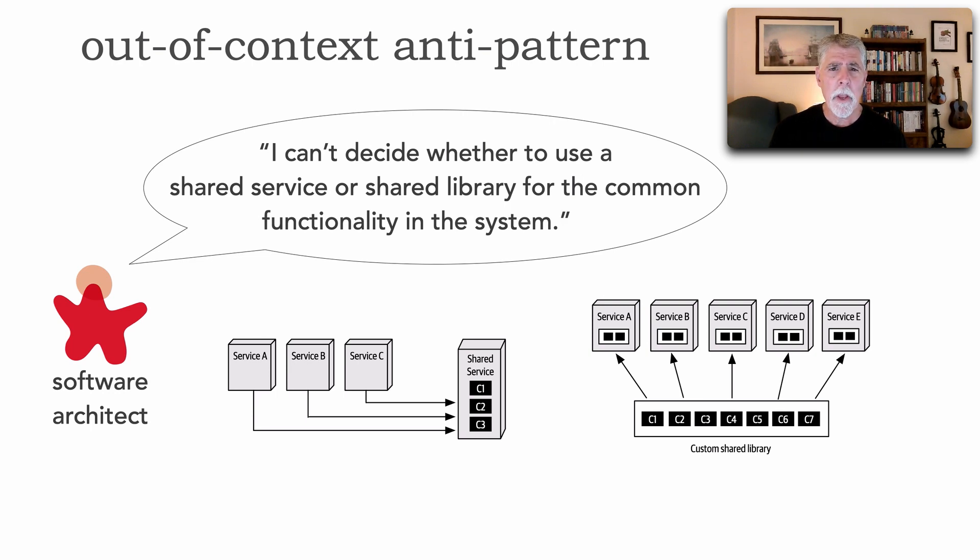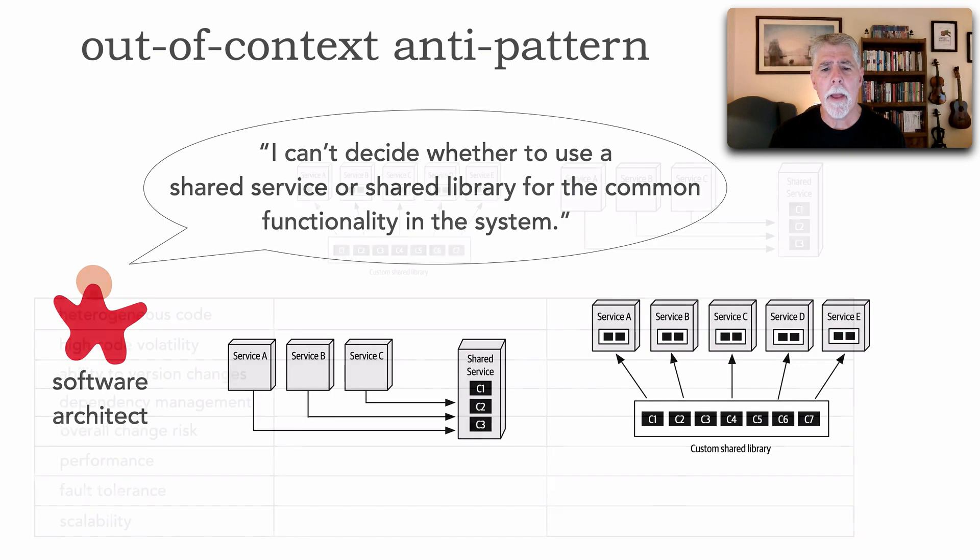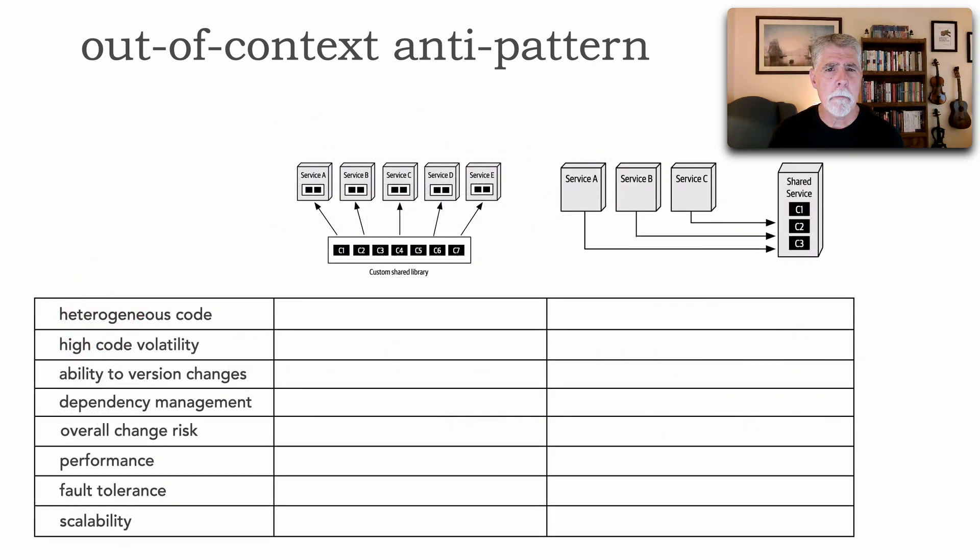So how do we go about identifying the trade-offs associated with these two options? One common way is to do what's called a scorecard. We take criteria on the left hand side and we analyze both options based on that criteria.